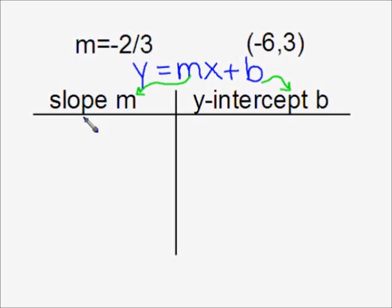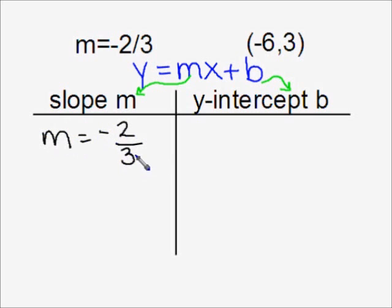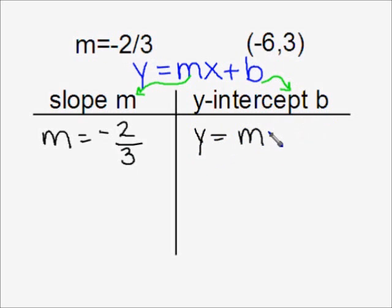Now, as far as the slope, we were given the slope, so we know that slope is equal to negative two-thirds. But we weren't given our y-intercept b, so we're going to solve for b by using our slope and the one point and plugging into y equals mx plus b.